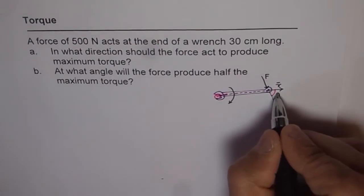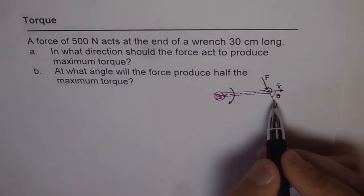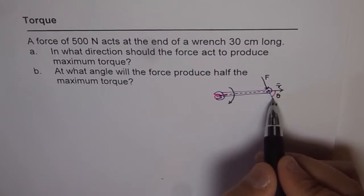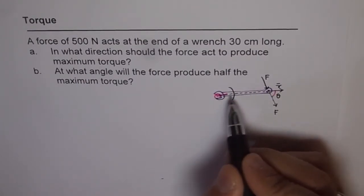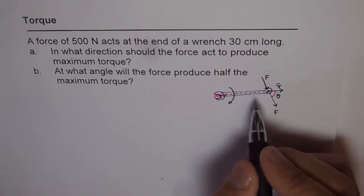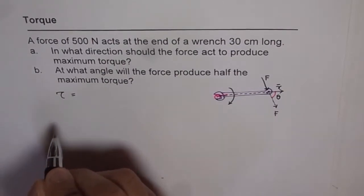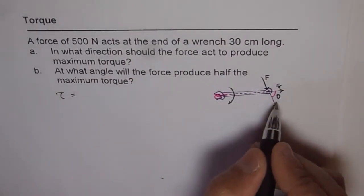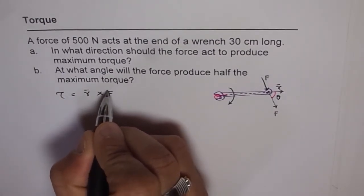The angle in between them is theta. So we have two vectors here. One is r, the other one is force. And always it is r cross f. If you move from r to f with right hand, this screw will move inside the paper. So we have the equation: torque equals r cross f, vector r cross f.